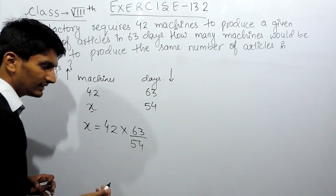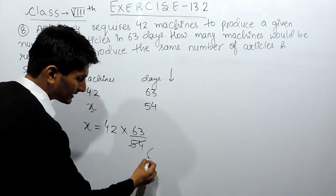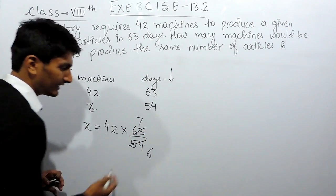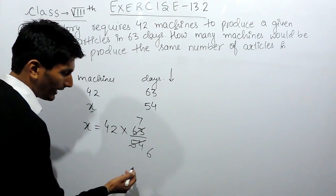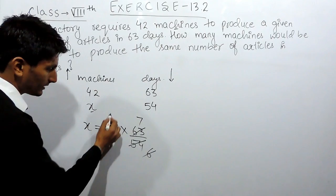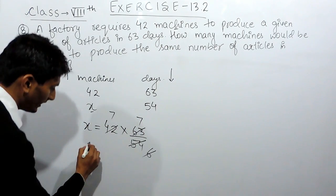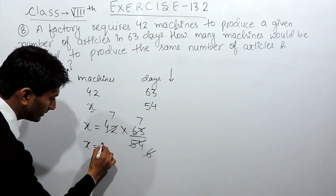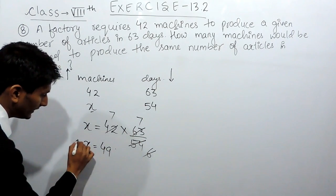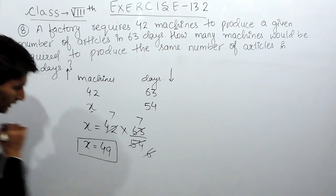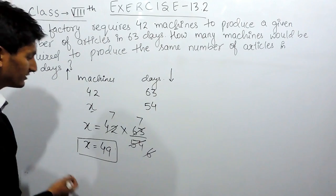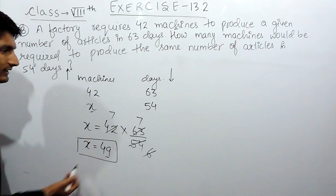Now, this can be cancelled by 9, 9 times 6, 9 times 7. And after that, this can be cancelled 7 times. So the value of x here will be 49. So obviously, the number of machines will be more, which is equal to 49 machines.